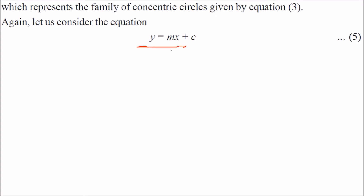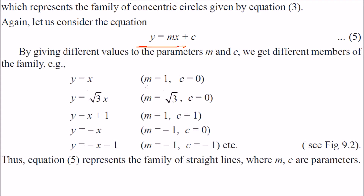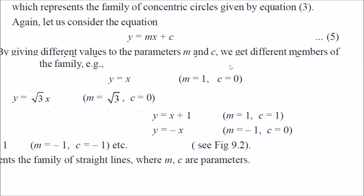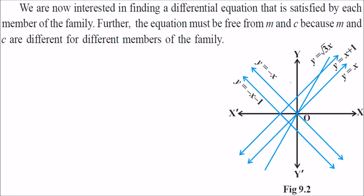Let us take one more example: y equal to mx plus c. This is simply a line. This totally depends on m and c. For various values of m and c, you can see there are various lines — all lines just on the basis of different m and c.